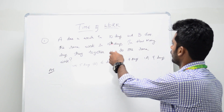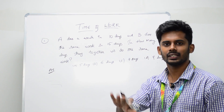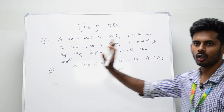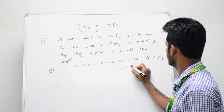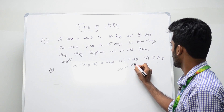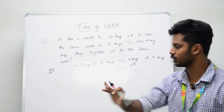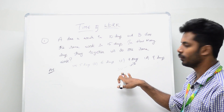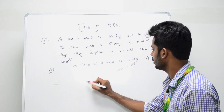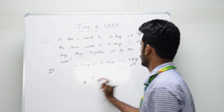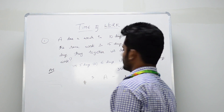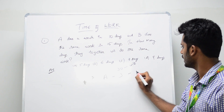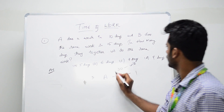Take the LCM of 10 and 15, which is 30. Consider the overall units as 30 units. Now, A completes the work in 10 days, and 30 divided by 10 is 3, so A does 3 units per day.